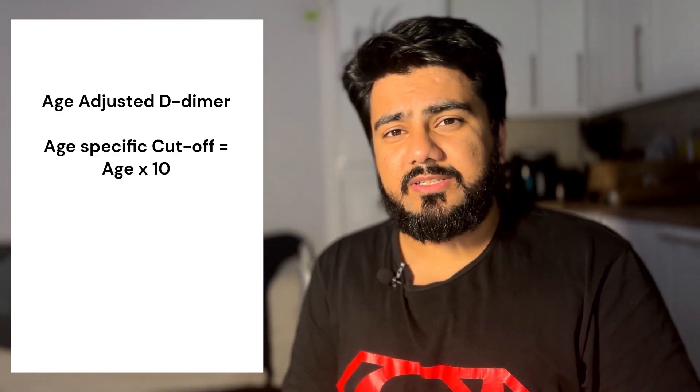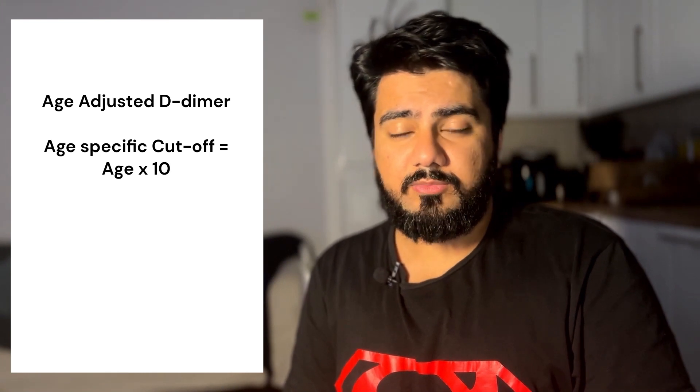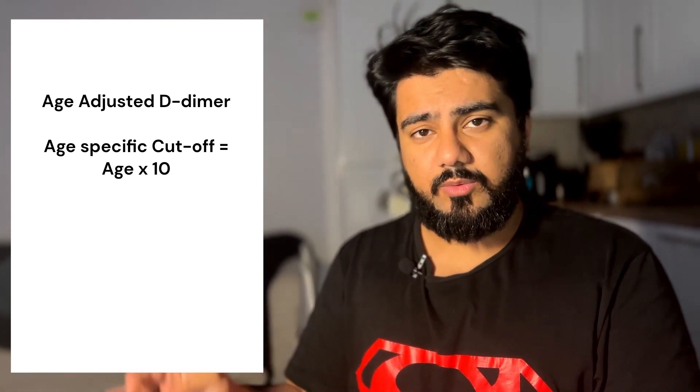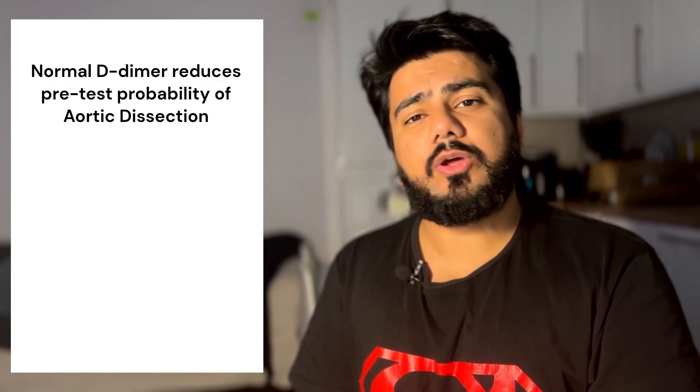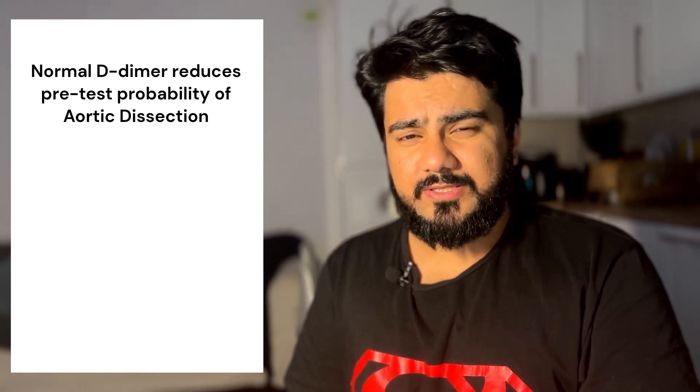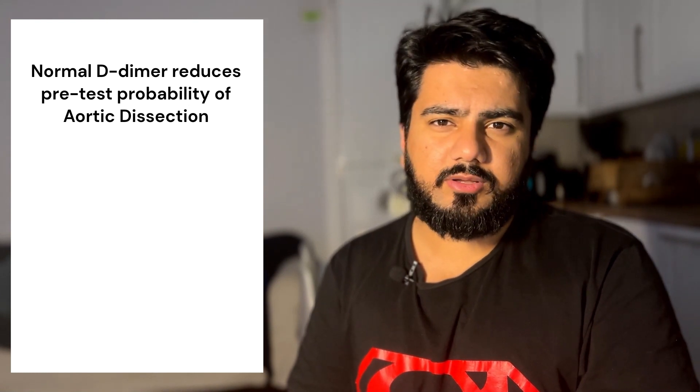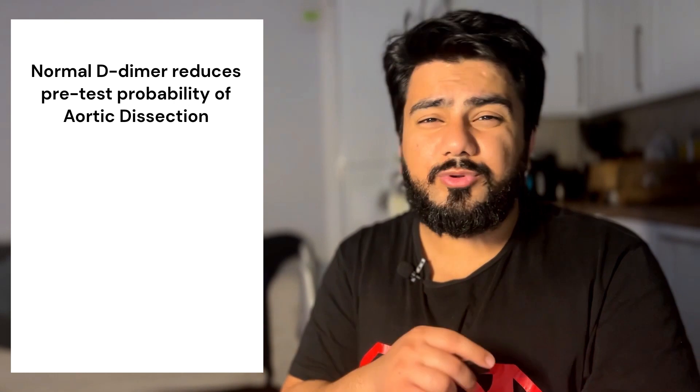After the chest x-ray, let's talk about D-dimers — the favorite test in emergency medicine. D-dimer is a very non-specific test and will be raised in many conditions apart from pulmonary embolism. It is most useful when the patient has a low pretest probability to rule out PE. Remember that D-dimers can be age-adjusted: age multiplied by 10 gives the specific cutoff for that patient. A normal D-dimer also reduces the pretest probability of acute aortic dissection, although most guidelines don't recommend using D-dimers in that fashion, so consult your local guidelines.